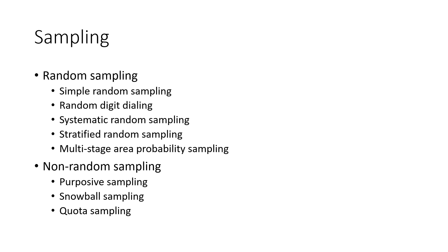There are a few different methods of random sampling. Simple random sampling involves, for example, having a population of 1,000 people and wanting a sample of 100 — you number each person from 1 to 1,000 and use a random number generator to randomly pick individuals from the sampling frame until you reach 100 participants. Random digit dialing is a more archaic form of sampling, since telephone-based sampling is rarely used anymore, but essentially involves randomly putting together phone numbers until you reach someone's telephone.